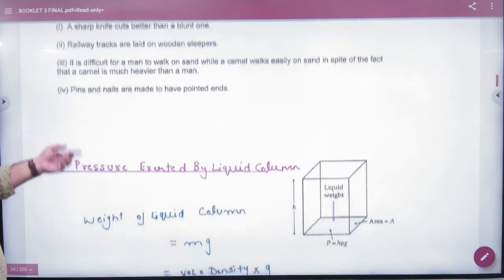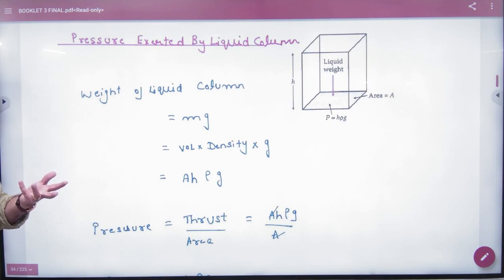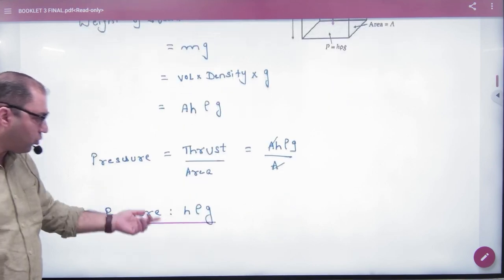Then we did that if we have a liquid in the vessel at its base, and H-height liquid, then what will be the pressure on base? H-Rho-G.